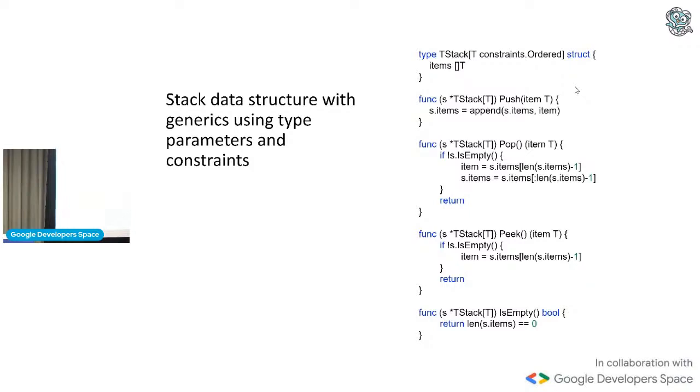So now if I use this using generics, using type parameters and constraints, let's say I use the constraint called the constraints.ordered. Okay? So look at the differences here. You have tStack. So tStack is the stack that I've just created. Now I need to put into the square brackets, the type, right? And when I define the struct, I need to specify the type parameter and the constraint. In the receiver itself, you also need to put in the type parameter. Okay? And then now we can use this.